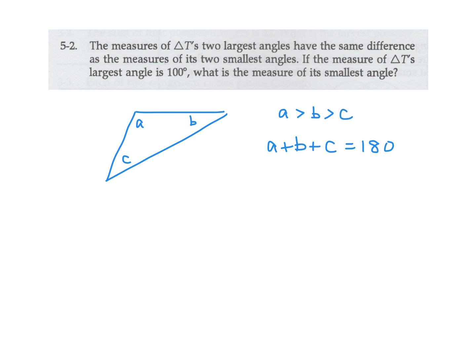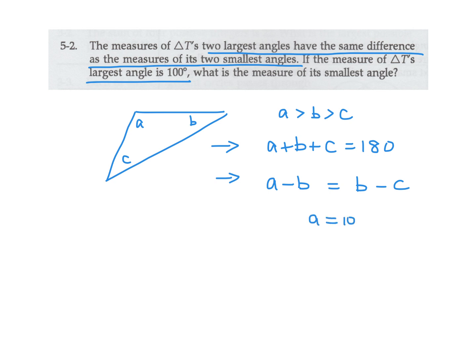Based on what they're telling me, that would mean A minus B is the same as B minus C — that's the interpretation of that sentence. I think these two equations should be enough to solve, but there's one more piece of information: A is 100.